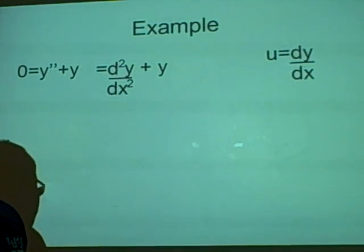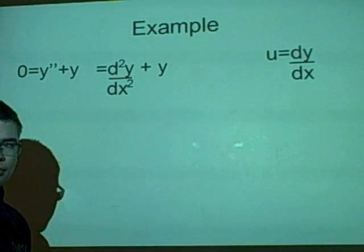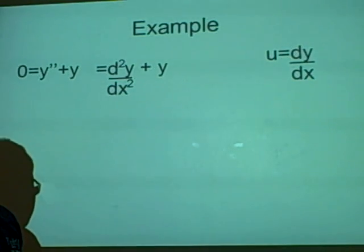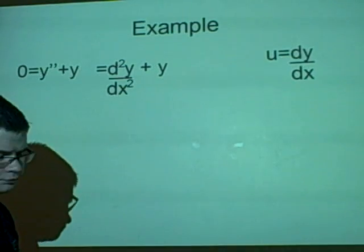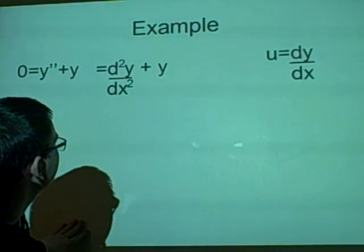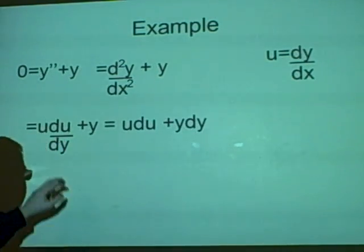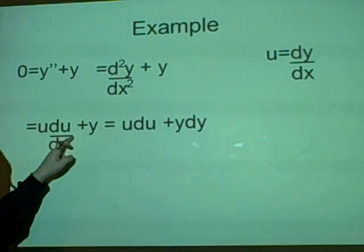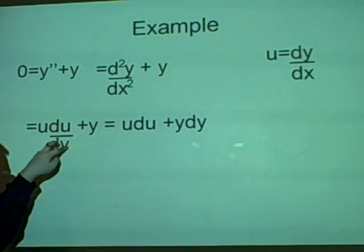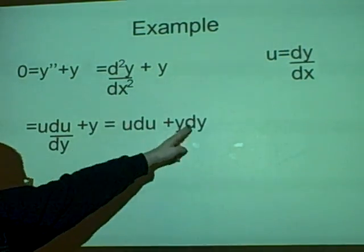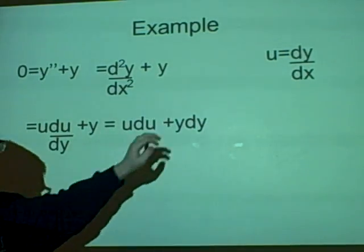So, as we said before, this equals u times du over dy. So we can put that in, plus y. And then looking here, we use separation of variables, and we can solve it by integrating both of these parts. So we integrate u and we integrate y.